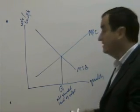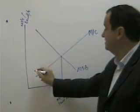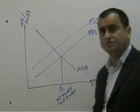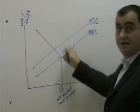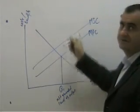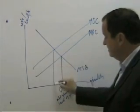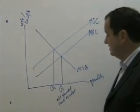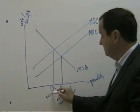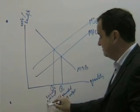But this is market failing because we should also consider the external costs, which we can add to the private costs. And this gives us a parallel marginal social cost curve, which is higher by a vertical distance equal to the external costs. Now we have a new equilibrium position here and a new output level, Q2, which is the socially optimal level of output.